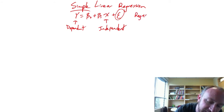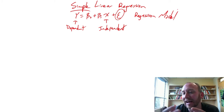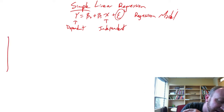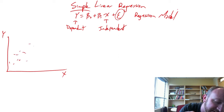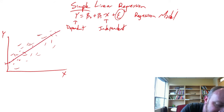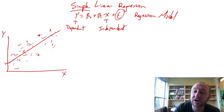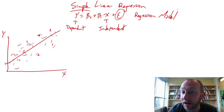This is our regression model. What this means is that if I could produce a scatter plot of the entire population of data, it might look something like this — here's y and here's x and here's all of the data within that population that I don't know. It looks like there's a positive relationship, but it's not a perfect relationship. Dots are all over the place, but on average, the scatter plot follows an upward trend.